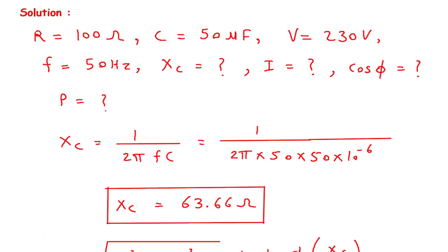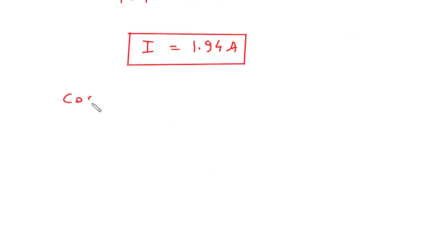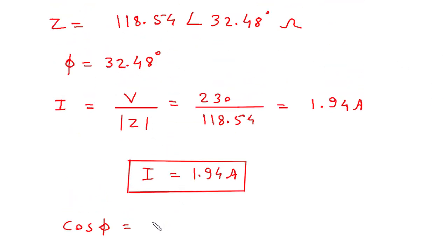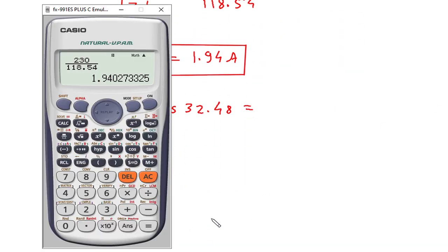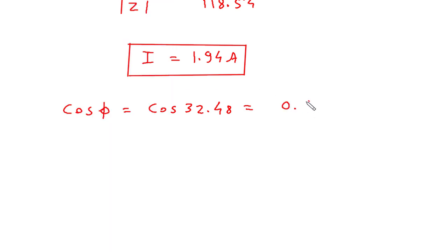Next we have to find cos phi. We have already calculated the angle as 32.48 degrees. So cos phi will be cos of 32.48, which is 0.843. Therefore cos phi is equal to 0.843.